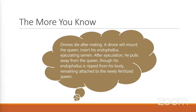A queen will mate with up to 15 or 20 drones in a two-week timeframe. She has a spermatheca where she will hold sperm, and that will be what she uses to lay her eggs throughout her entire life. Once the sperm runs out, she can't lay any longer and the hive will replace her — all going back to pheromones.